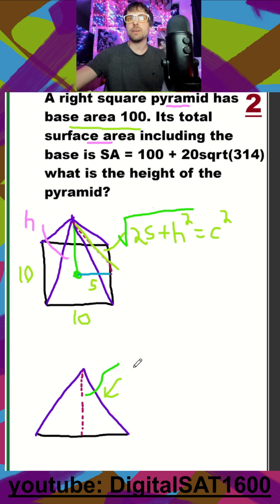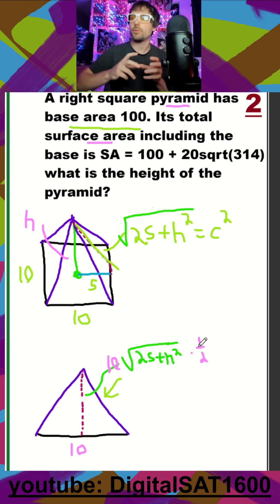This value down here. So this is just going to be the square root of 25 plus h squared. And then the only thing else we need to get area of a triangle is our base, and our total base length here, because it's a square base, is just going to be 10. So all we have to do is 10 times this times one half is going to be the area of one of our triangular faces.